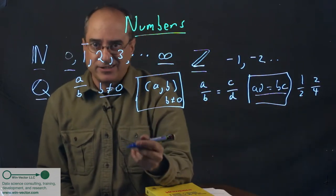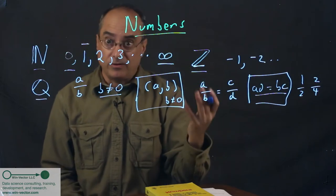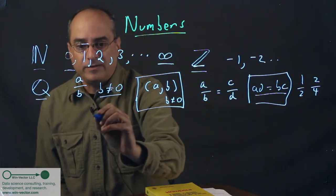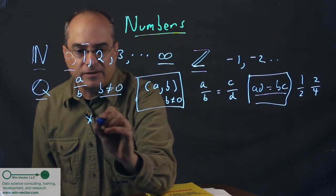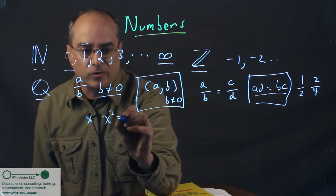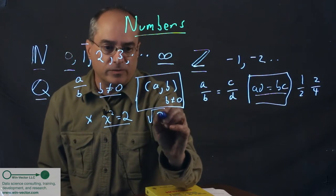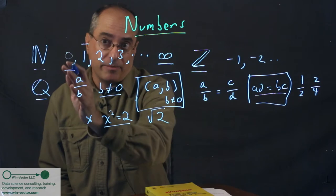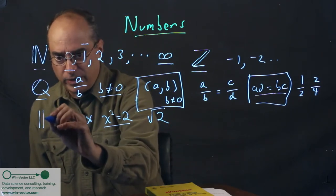We can't stop at the rational numbers, unfortunately, because they're missing a lot of numbers, as far as we're concerned. For instance, we believe there should be a number x such that x squared equals 2, or the square root of 2. That is not a number in the rational numbers. So we build a larger set of numbers called the reals.